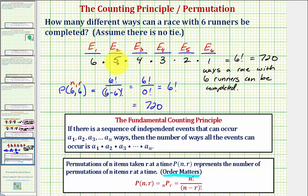Whether we use the counting principle or the permutation, there are 720 ways to finish a race with six runners, given there is no tie. I hope you found this helpful.